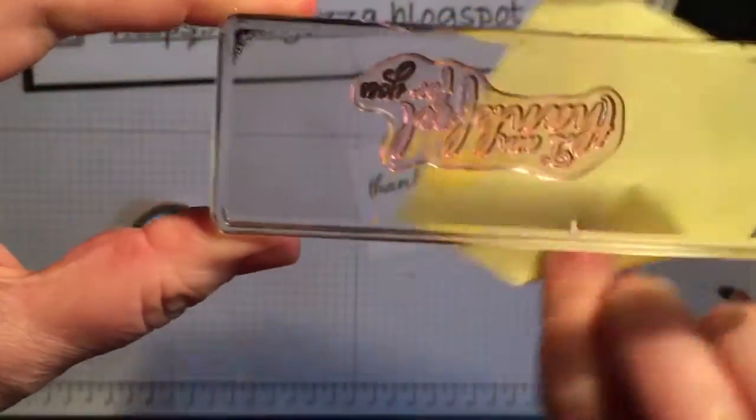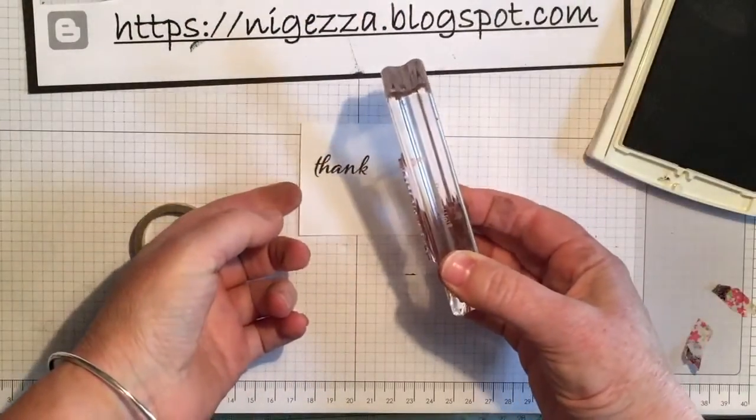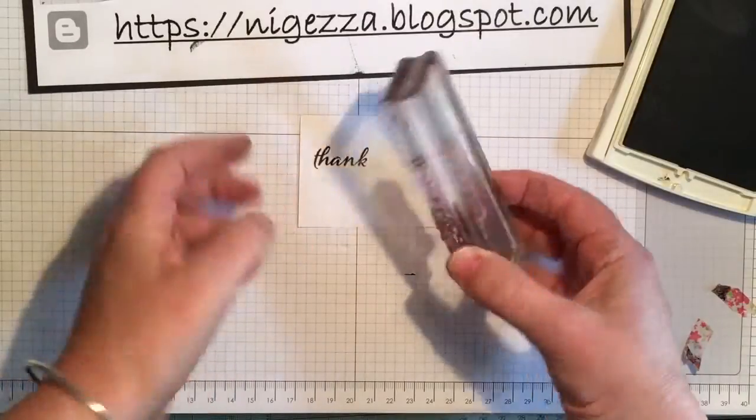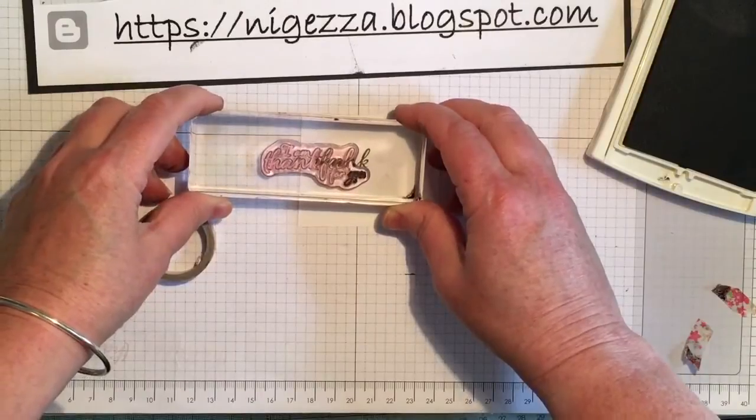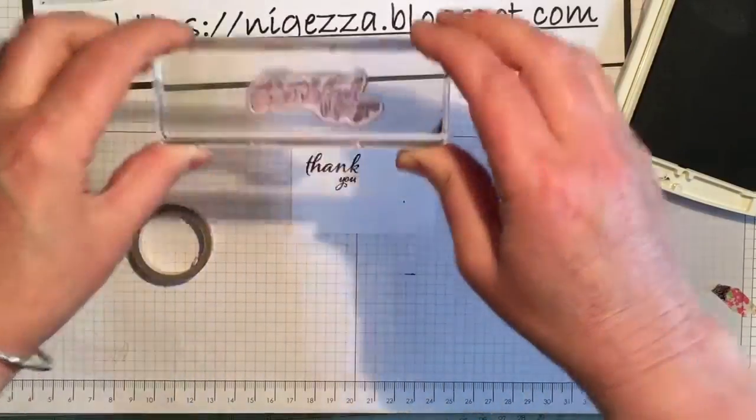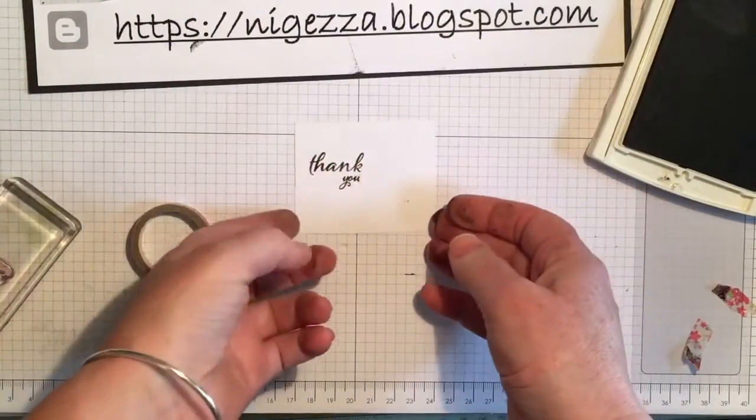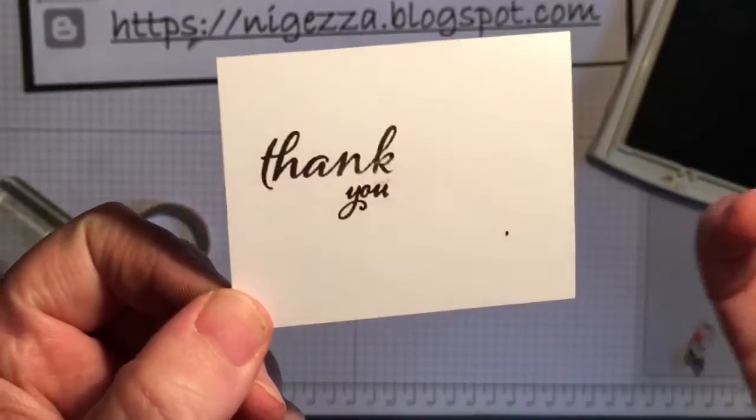And then that's just taking away the u that's got the ink on, and then you decide. What I did, I did it next to it and then I thought actually it might be quite nice to go underneath like so. So that gives you a nice little thank you. You could do it next to it if you wanted to.